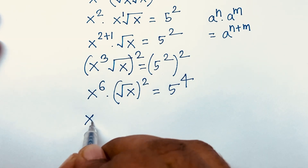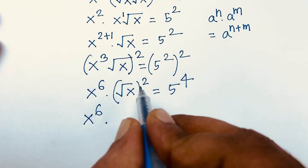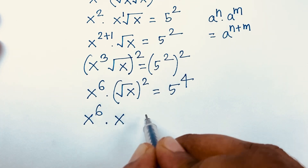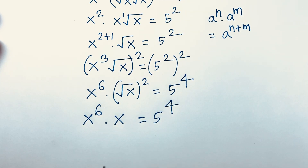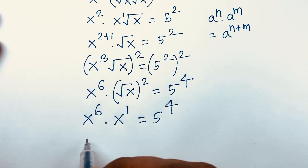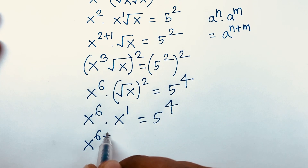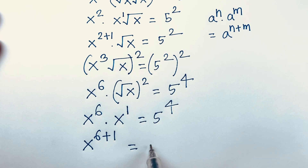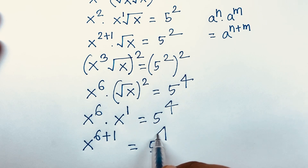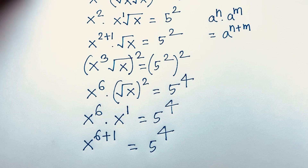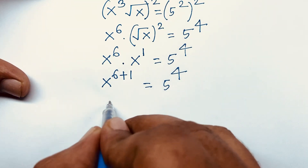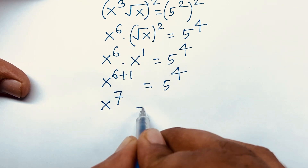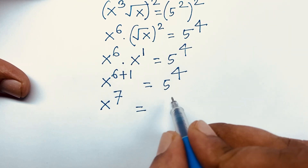Here is x to the power 6 times square root, which cancels, giving x is equal to 5 to the power 4. The exponent on x becomes 6 plus 1, so it will be x to the power 7 is equal to 5 to the power 4.